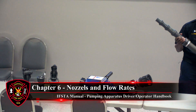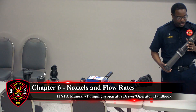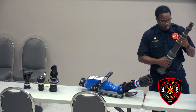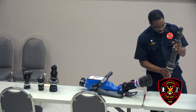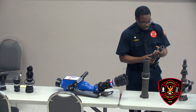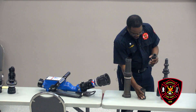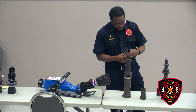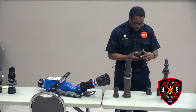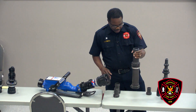Our smooth bore tips can be put on our monitor — either mounted or removed for portable use. We have four tip sizes: inch and three-eighths, inch and a half, inch and three-quarters, and two inch, flowing approximately 500, 600, 800, and 1,000 gallons per minute respectively.